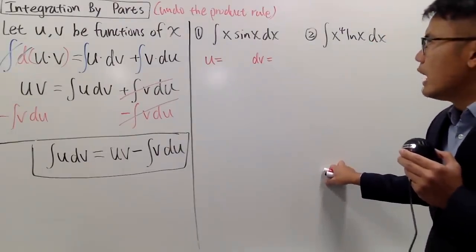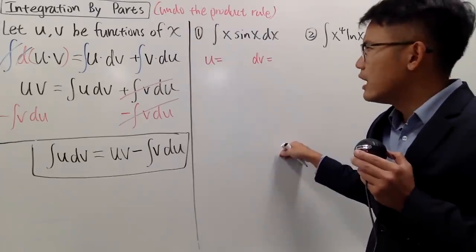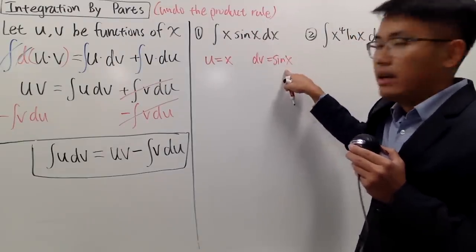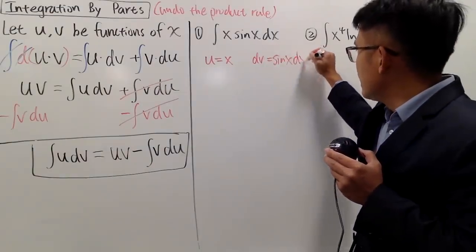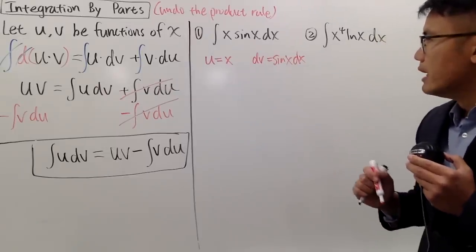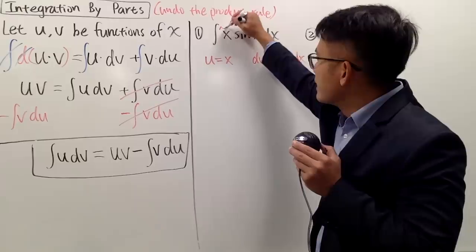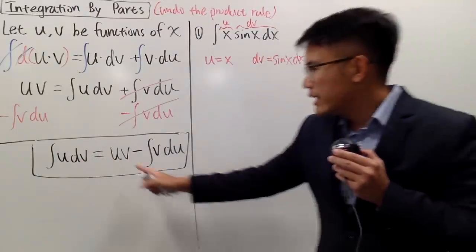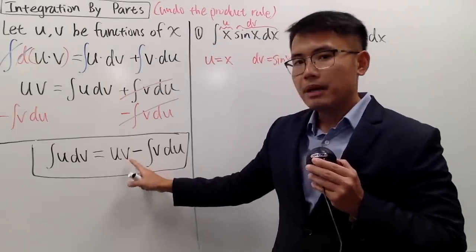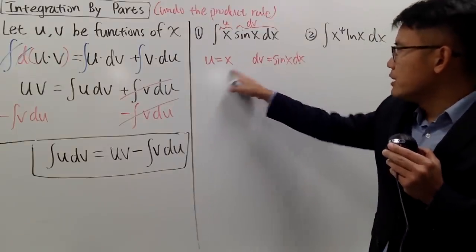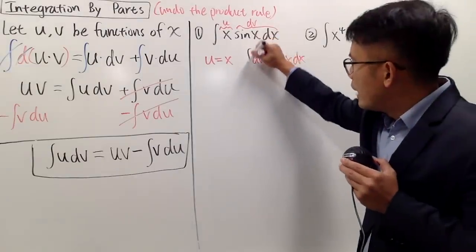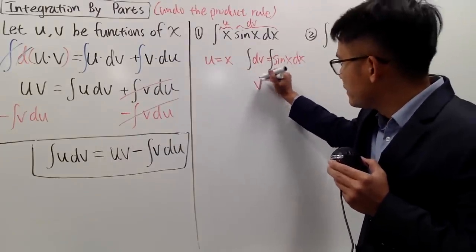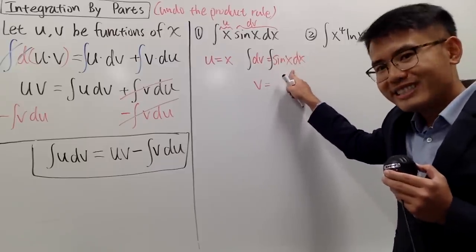We have two functions: x and sin(x). I'm going to choose u = x and dv = sin(x) dx, attaching the dx to dv. Now I need to find v from dv. To get v, I integrate both sides of dv = sin(x) dx. The integral of sin(x) is negative cos(x), so v = −cos(x). We don't need to add a plus C here because this is not the final integral we care about — we only put plus C at the very end.